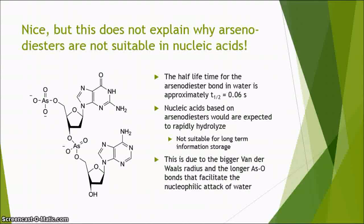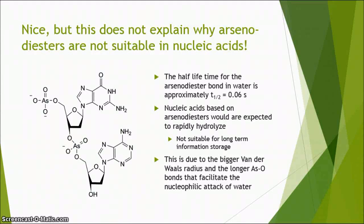So now we are ready to answer why nature does not rely on arsenodiester bonds. If you look up the pKa values of arsenic acid, you will see that they are similar to those of phosphoric acid. Nevertheless, the half-life of an arsenodiester bond in water is an extremely short 0.06 seconds, even though it also carries an active charge. We can explain this in terms of the periodic table: arsenic is one row below phosphorus and therefore has a bigger atomic radius. It has been suggested that this, combined with the longer arsenic-oxygen bond, makes arsenic more accessible to nucleophiles and therefore more prone to hydrolysis. A small difference can account for quite a large change in reactivity.